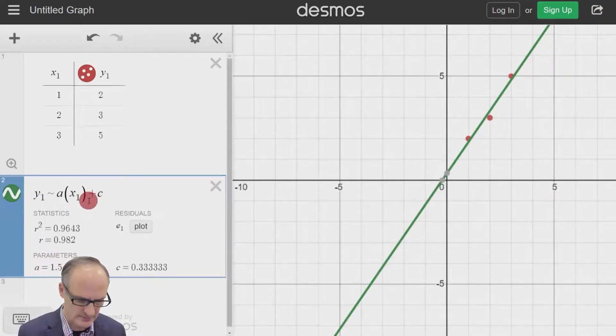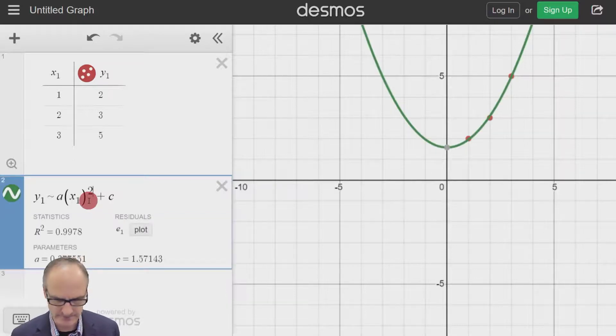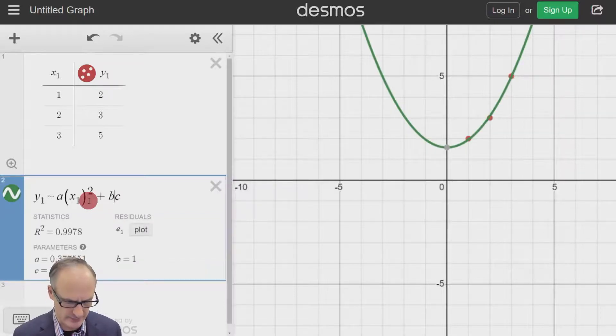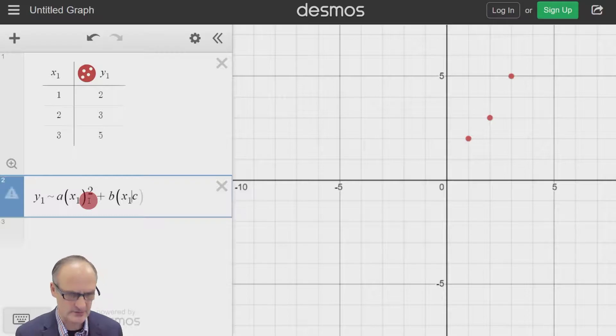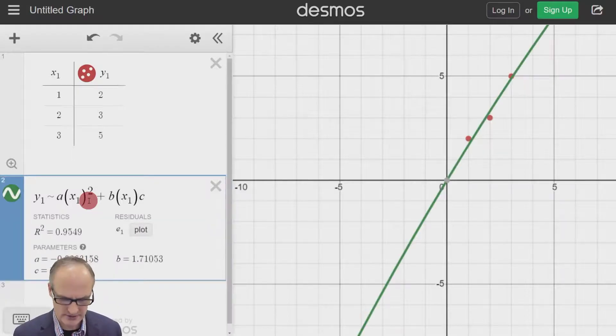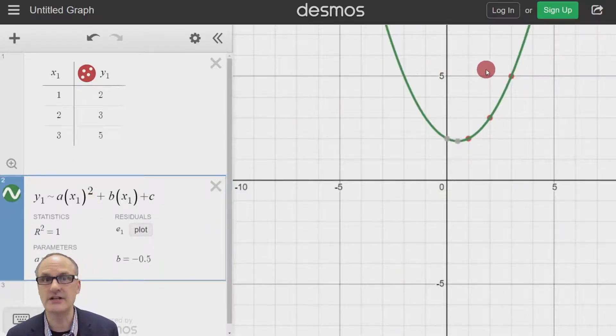So let's make it a quadratic. Let's put to the power two using the power button, and let's put a B in brackets X1 plus brackets plus C here. And we can see now we have a curve that goes straight through all these points. And therefore the equation that we have here is going to be Y equals A, which is 0.5 X squared minus 0.5 B, plus C which is two.